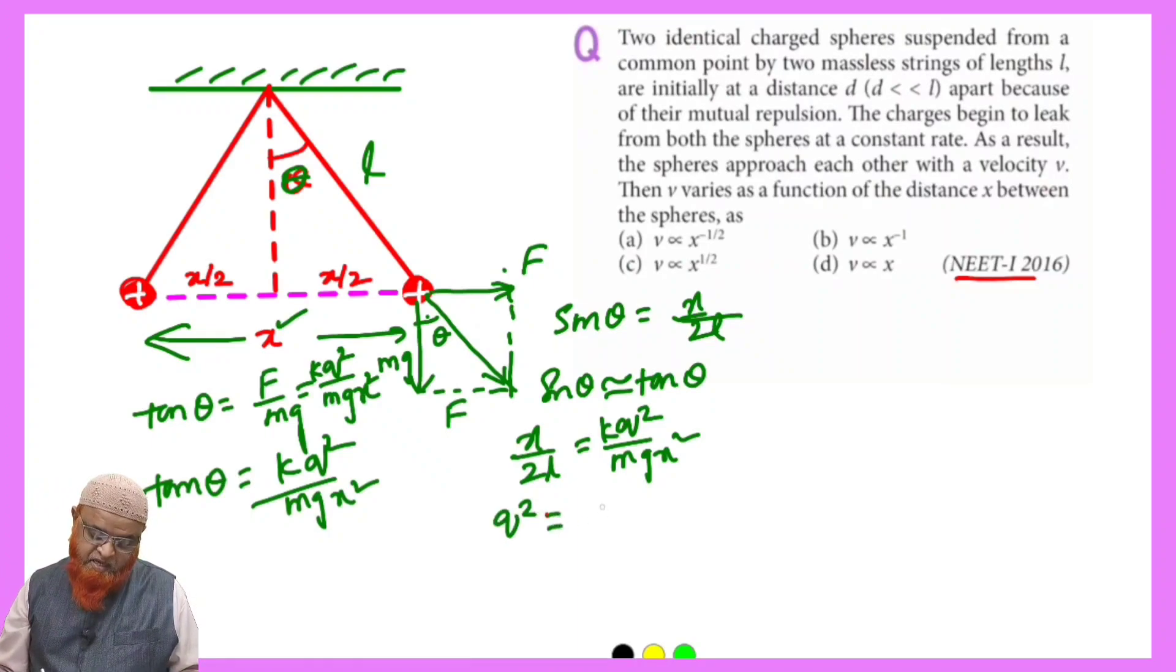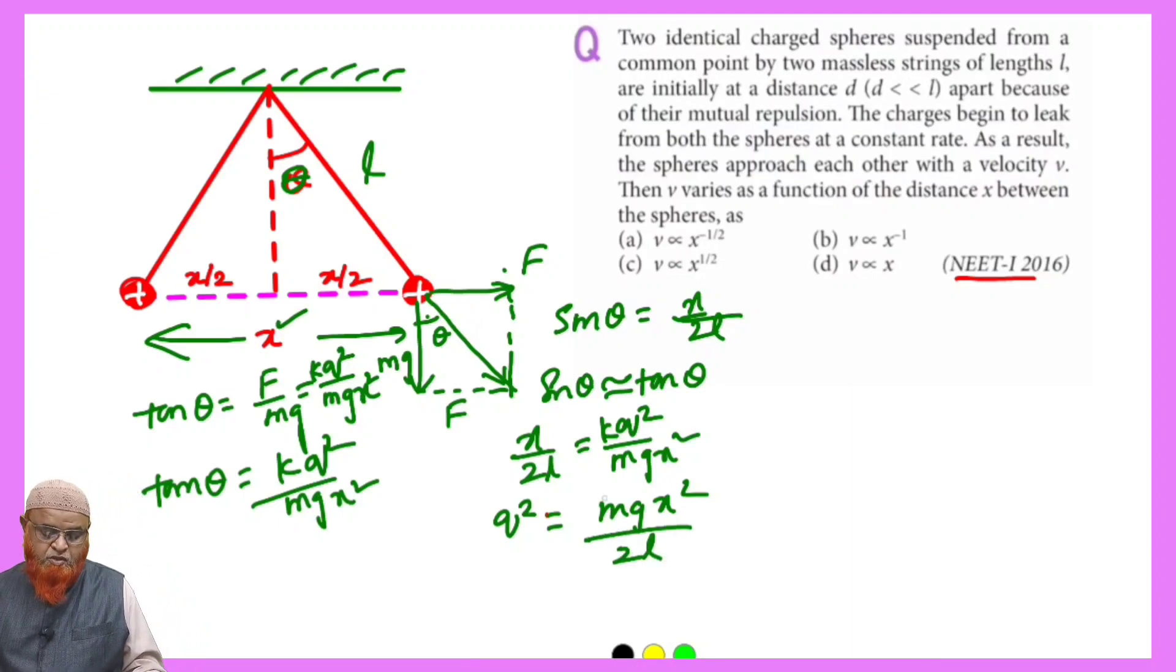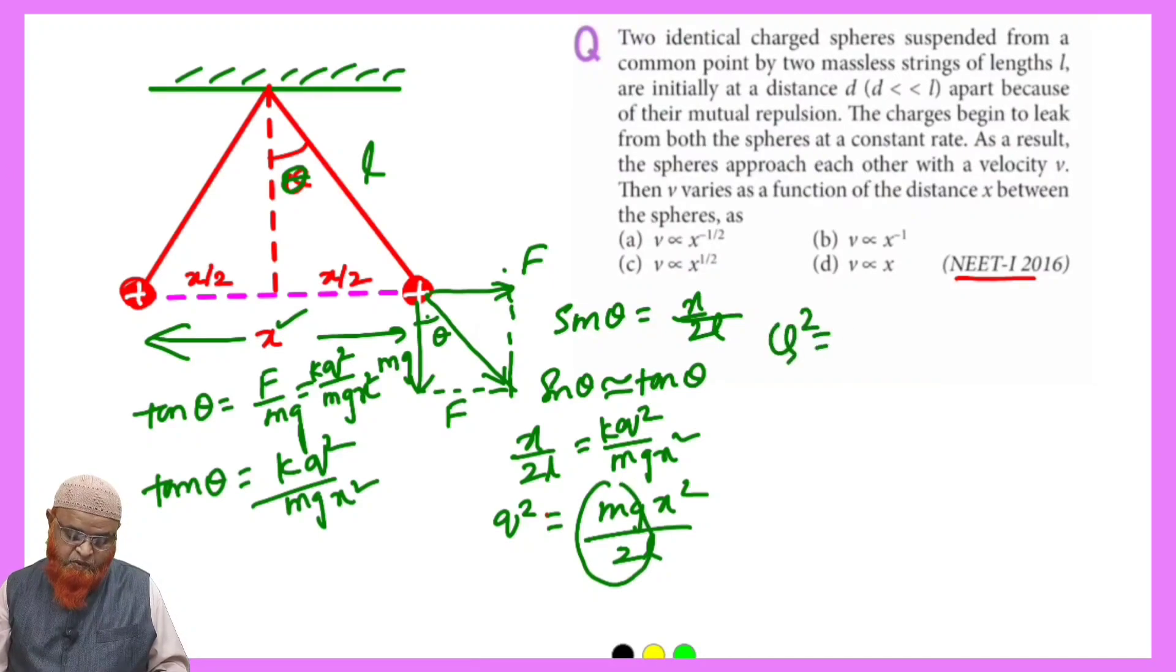Now we can take q² to one side and take mgx³ by 2l here. These are all going to be constant, so we can write q² is equal to...